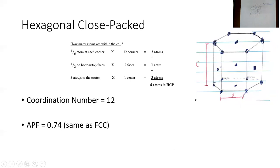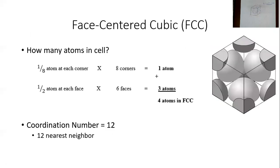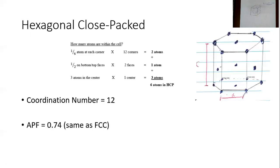The last one is the HCP — hexagonal close-packed. The coordination number is 12, the same as FCC. The total number of atoms in the HCP unit cell is six. The atomic packing factor of HCP is exactly the same as FCC: 74%. The unit cell is hexagonal, so the copy-and-paste pattern uses hexagons rather than cubes.